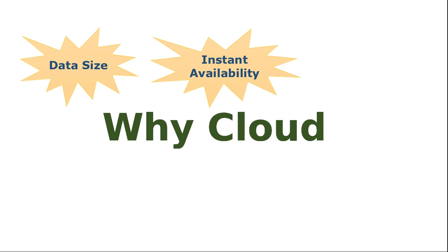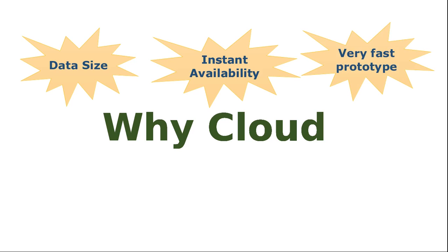Another interesting thing about the cloud is instant availability. You may have heard about Google Cloud Compute Engine or Amazon EC2, the Elastic Cloud Computing Engine. Suppose you instantly want a hundred or even a thousand different servers — within half an hour or a short span of time, they will be instantly available. Also, very fast prototyping is possible. You can immediately deploy with a small amount of data, see results, keep iterating, and once satisfied, move to a bigger plan. It is very difficult to do these things in your local infrastructure.